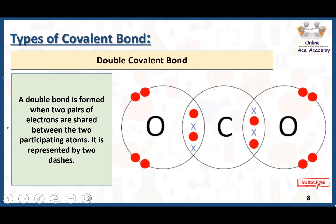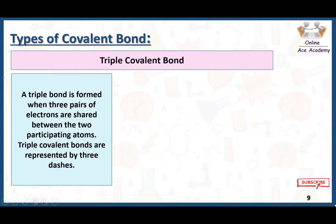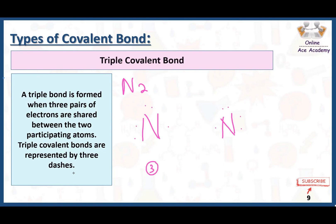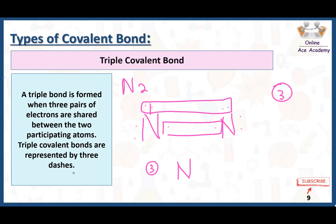The third type is the triple covalent bond. A triple bond is formed when three pairs of electrons are shared between the two participating atoms, and it is represented by three dashes. For example, nitrogen — N₂ — has five electrons in its outermost shell. Both nitrogen atoms need three more electrons to get stable. They share three pairs of electrons to complete their octets, forming three bonds between them. This gives both nitrogen atoms eight electrons in their outermost shell.